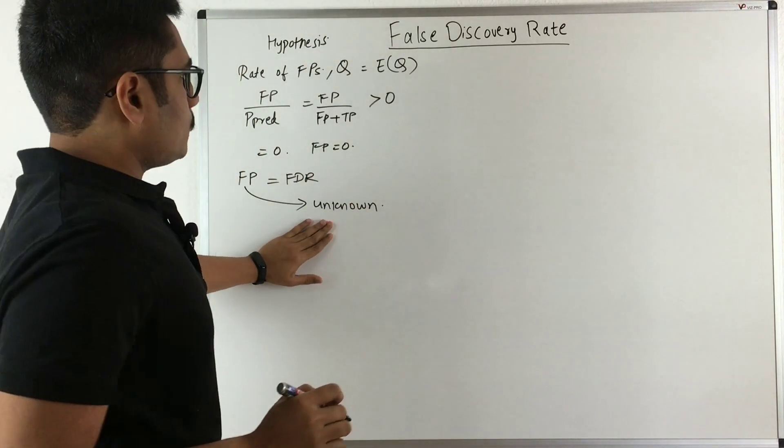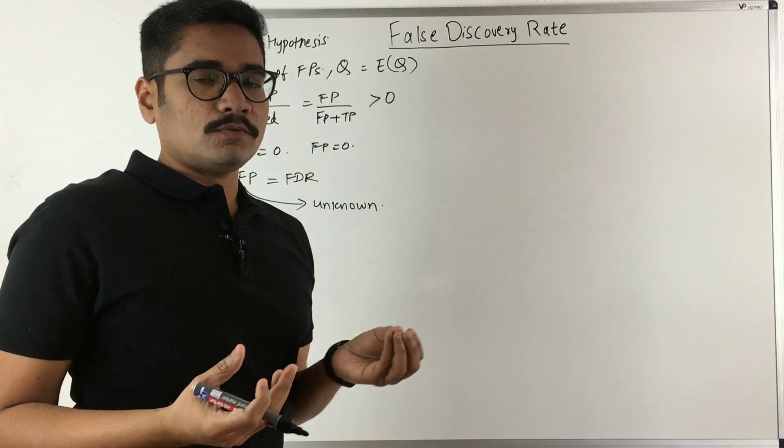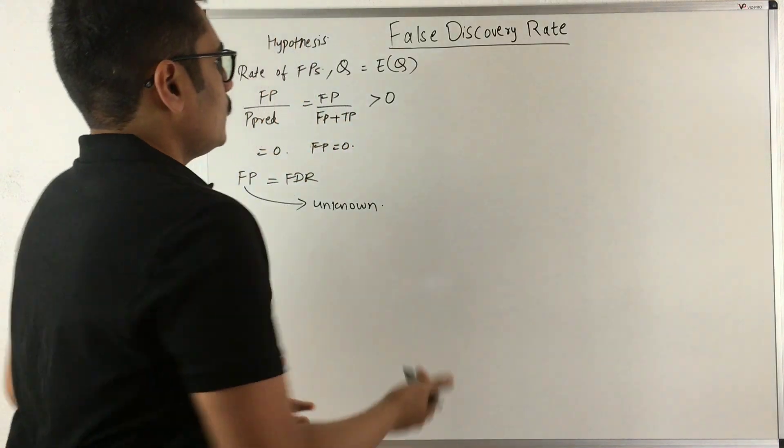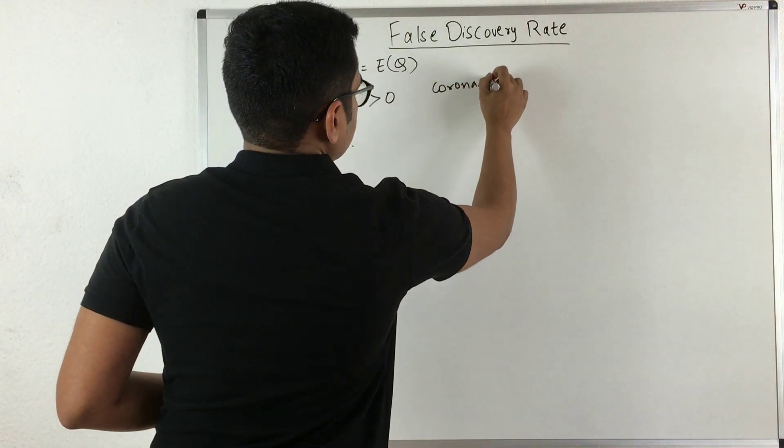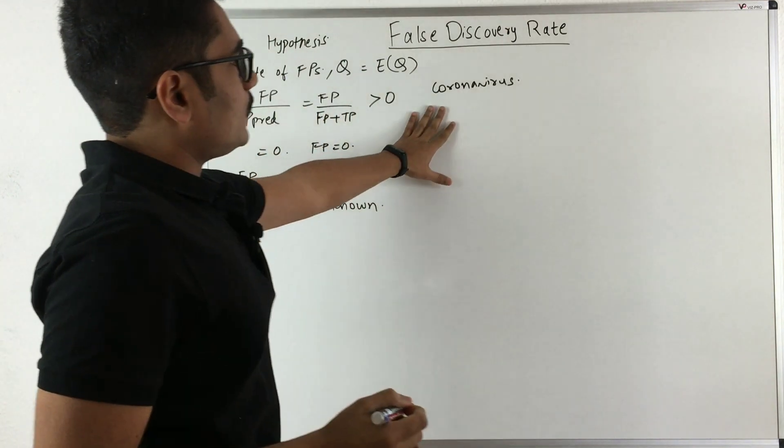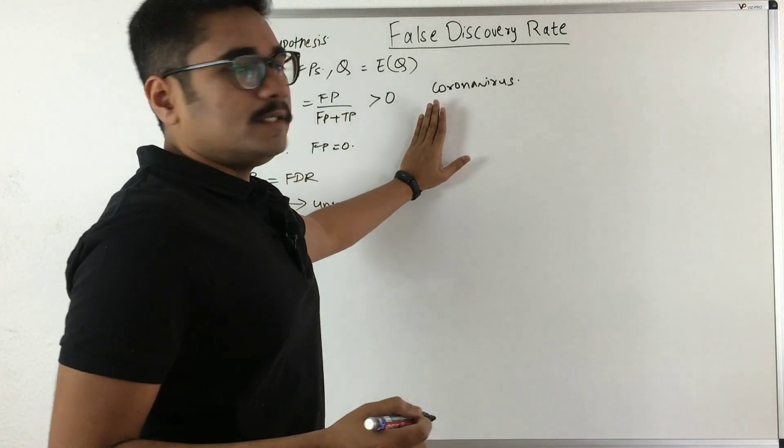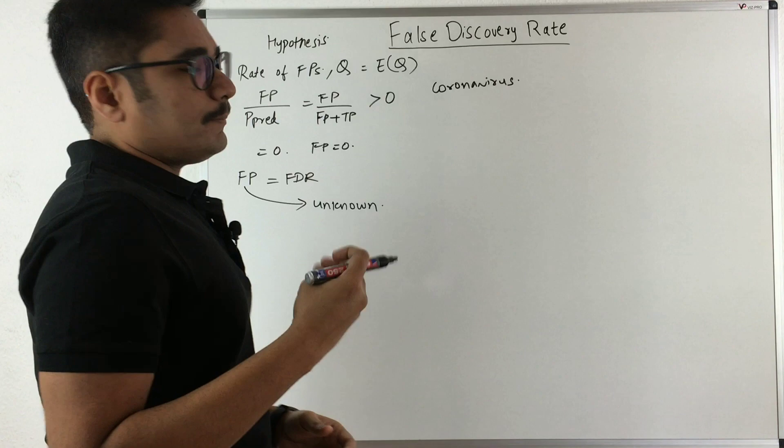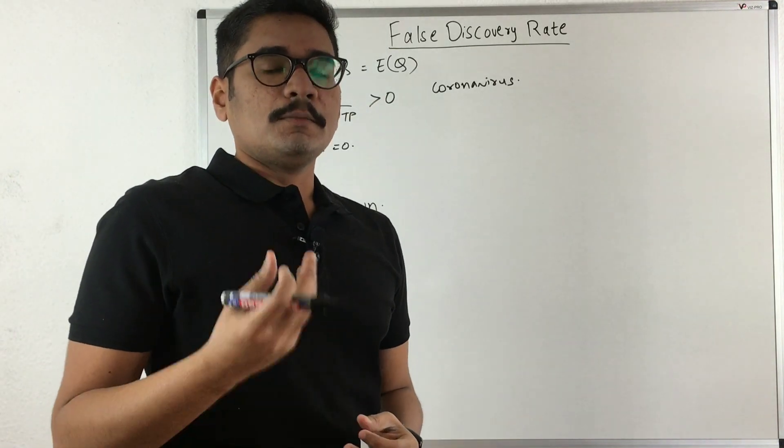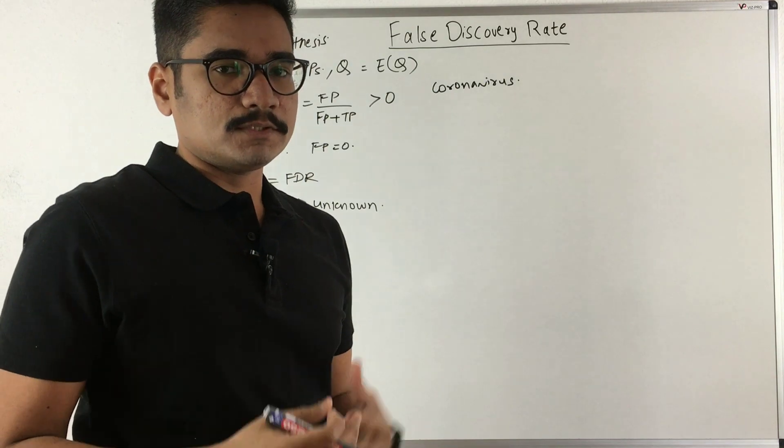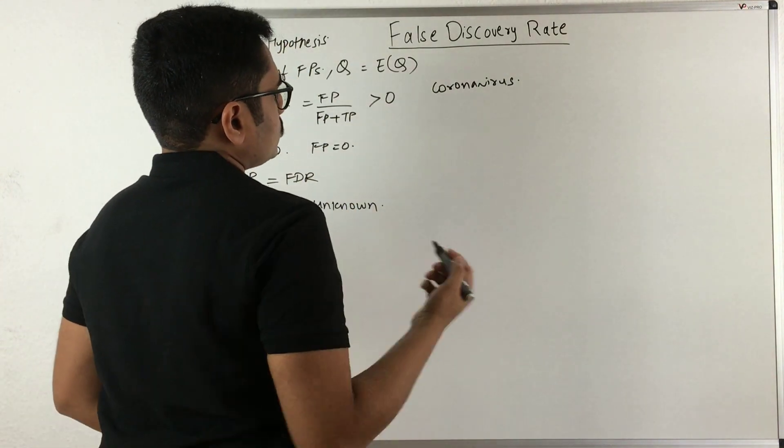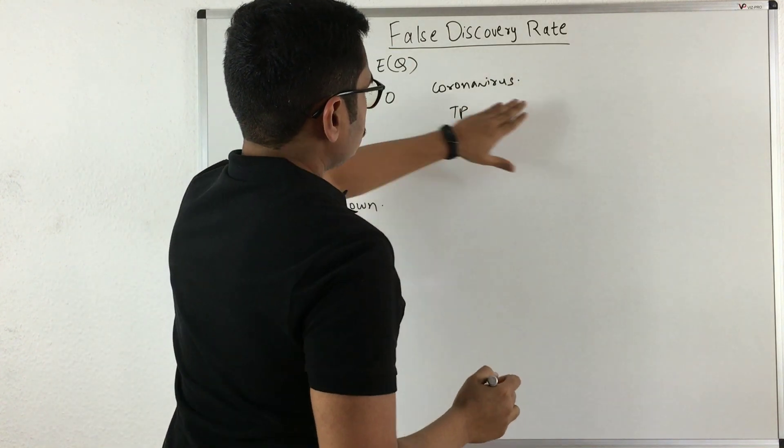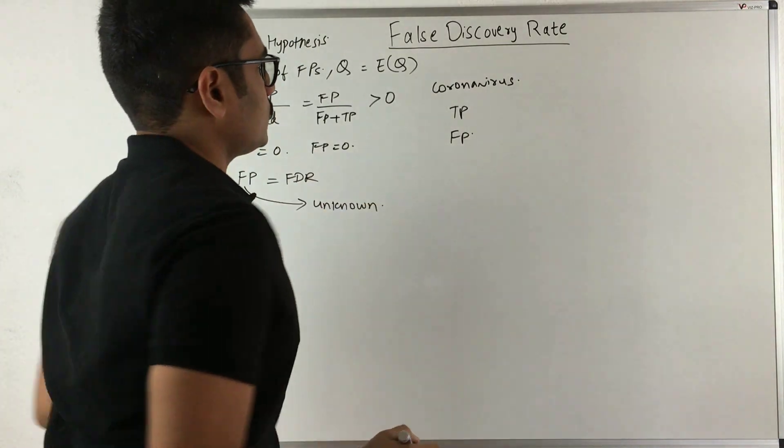Let's consider an example. Since in recent times we have the coronavirus outbreak, this disease is distributed all over the world. It becomes critical that we need to identify each and every person who is suffering from this. We have true positives and false positives. We need not consider false negatives and true negatives in this case.